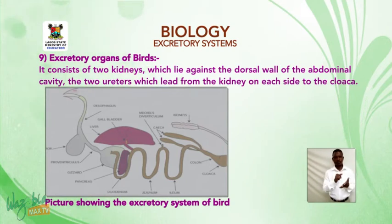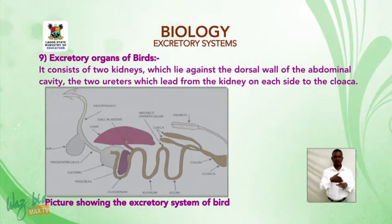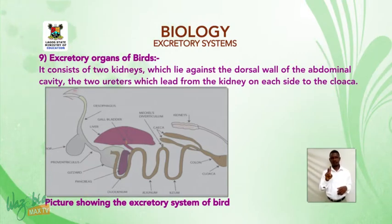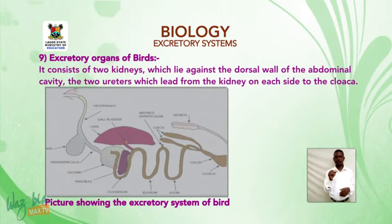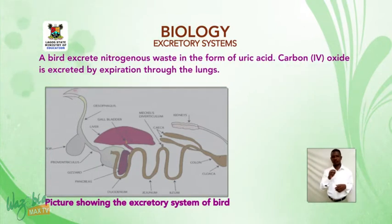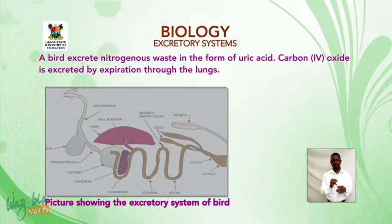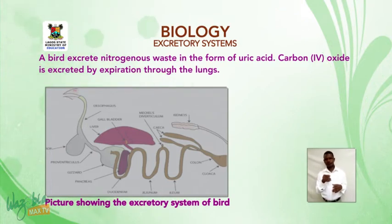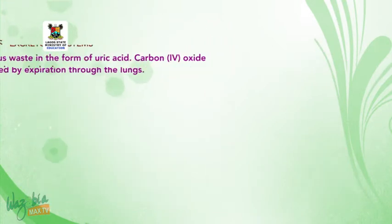In birds, the excretory system consists of two kidneys lying against the dorsal wall of the abdominal cavity and two ureters leading from each kidney to the cloaca. Birds excrete nitrogenous waste in the form of uric acid, and carbon dioxide is excreted by expiration through the lungs.